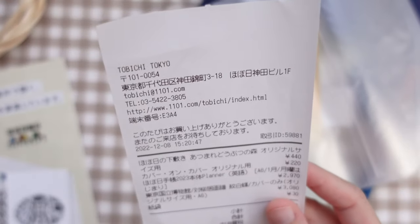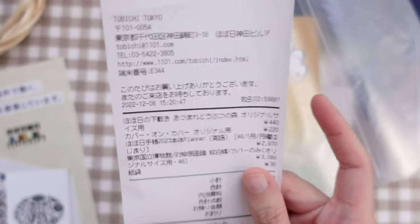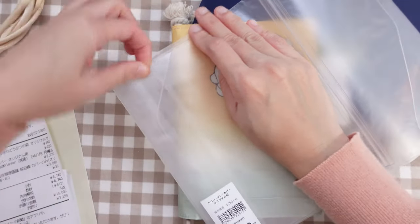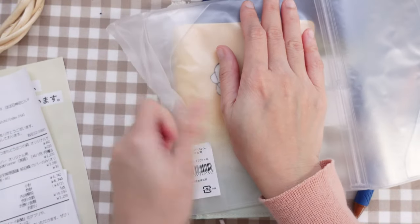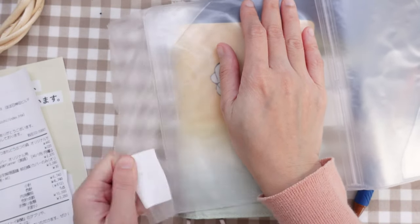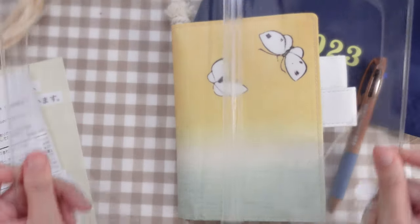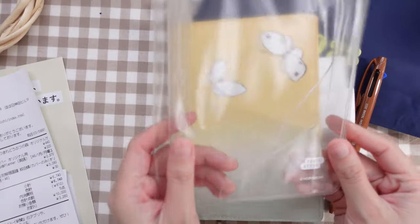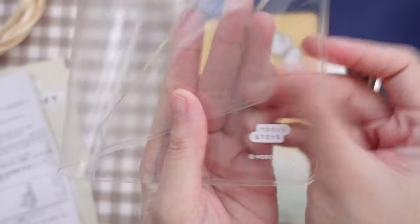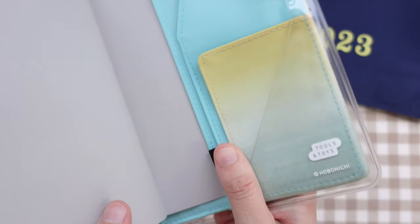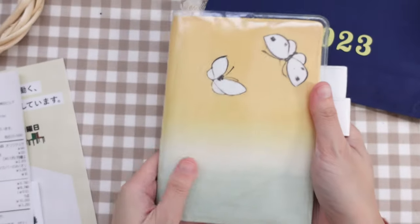So this is what I got. This cover is Kaba on Kaba. This cover is 220 yen. Nothing fancy, just a clear cover. Here on the right side, it says, Tools and Toys by Hobonichi.